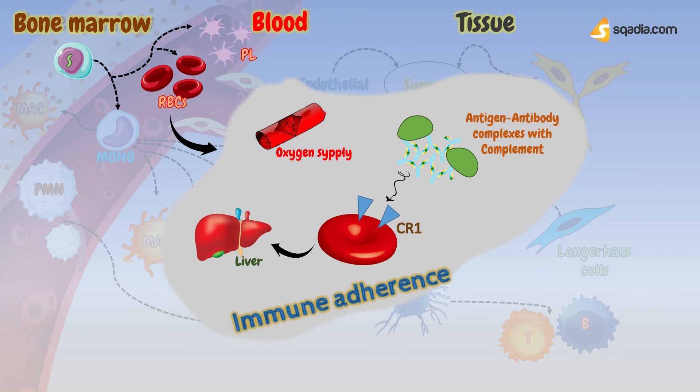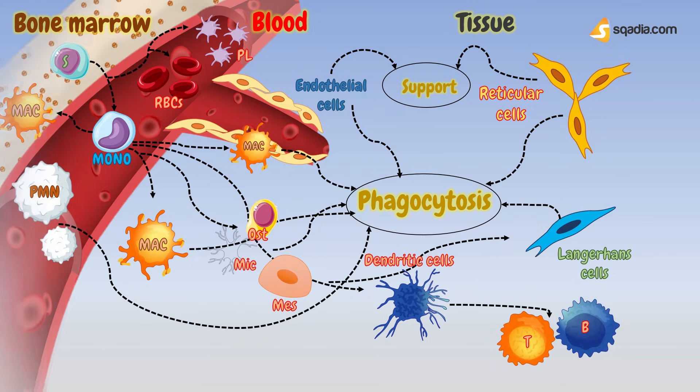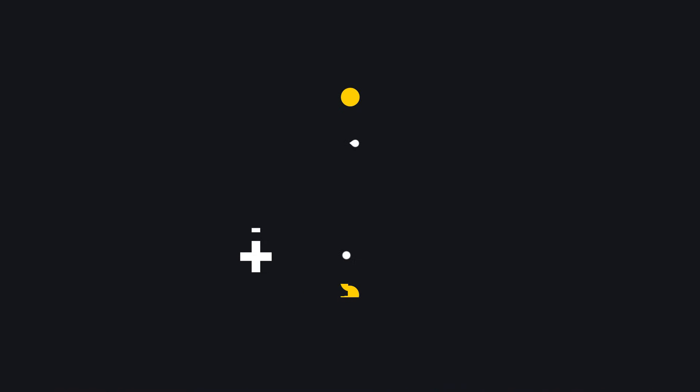So this was all about phagocytic cells that undergo phagocytosis and thus are an important part of our body's immune system. This video must have improved your knowledge. For more such educational videos, keep watching.